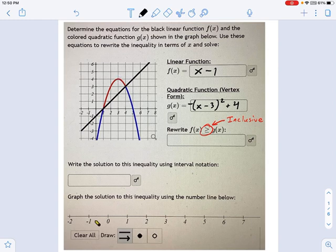So there's our equation work out of the way, and now I want to rewrite these two equations in inequality form. So in other words, x minus 1, that's f of x, greater than or equal to negative x minus 3 squared plus 4. That's it. That's this part. I've rewritten it as an inclusive inequality.